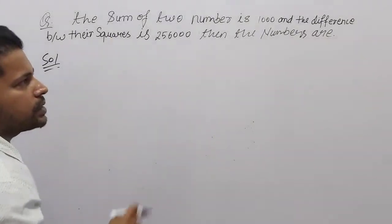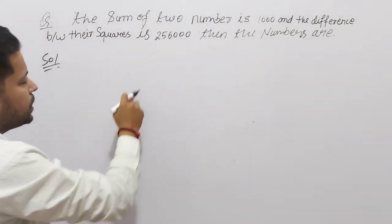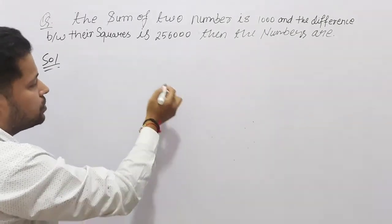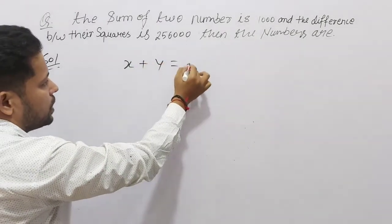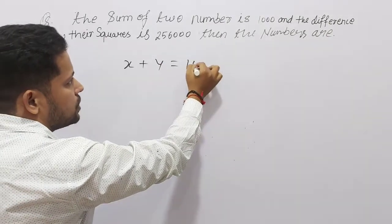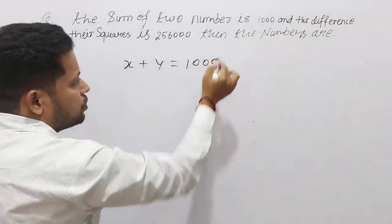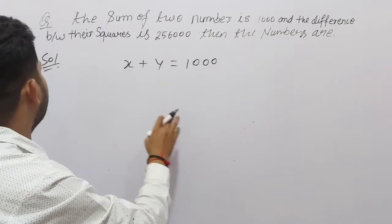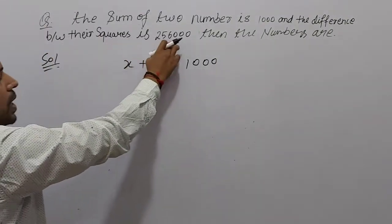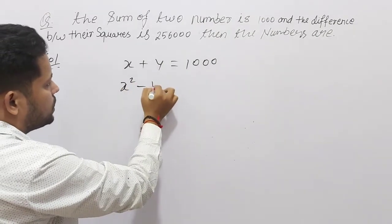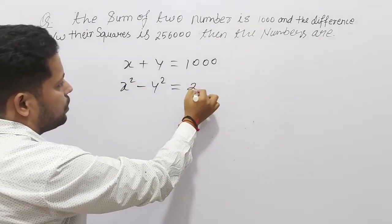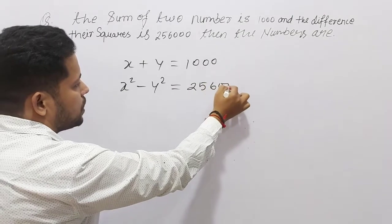The sum of two number is 1000. Let me the numbers is x and y. So, x plus y is equal 2000. And the difference between their square is 256,000. So, x square minus y square is equal to 256,000.